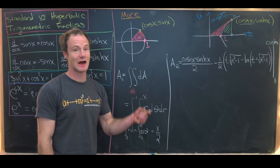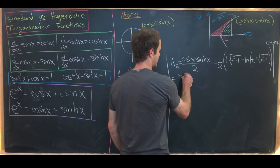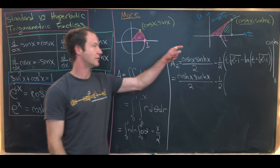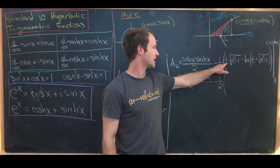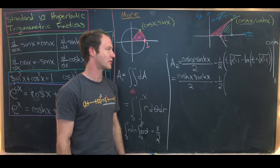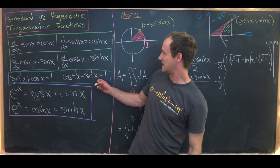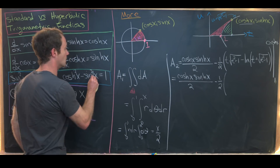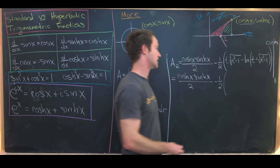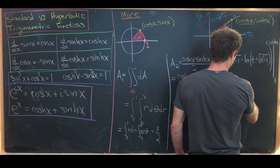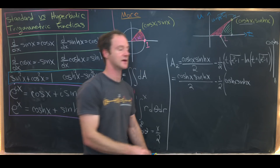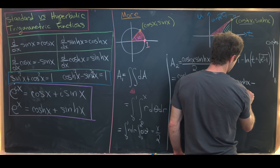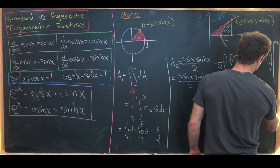We're now ready to evaluate. Area 2 equals hyperbolic cosine x times hyperbolic sine x over 2, minus one half times the following. Plugging in hyperbolic cosine x for t, we get hyperbolic cosine times the square root of hyperbolic cosine squared minus 1. Using the identity cosh² x − sinh² x = 1, hyperbolic cosine squared minus 1 equals hyperbolic sine squared, so the square root is just hyperbolic sine. For the logarithm term, we get the natural log of hyperbolic cosine plus hyperbolic sine.